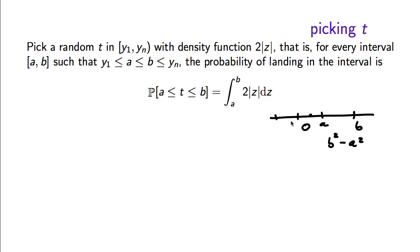We also define it so that for a negative interval cd, the probability of the threshold falling in there is c squared minus d squared. The distribution that gives these properties has density function 2|z|: when a and b are positive the density is 2z and its integral is z squared; when negative the density is −2z and the integral is −z squared.